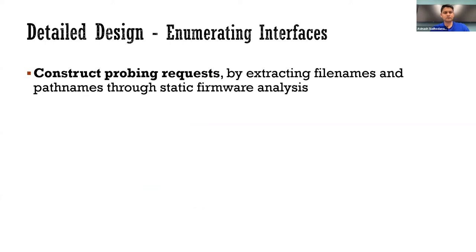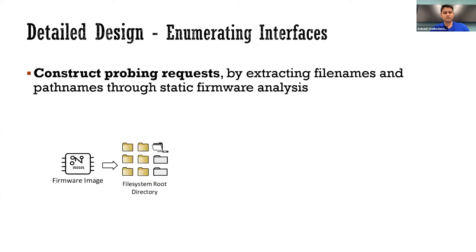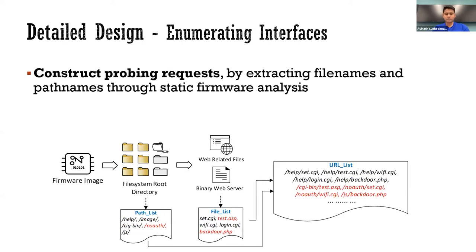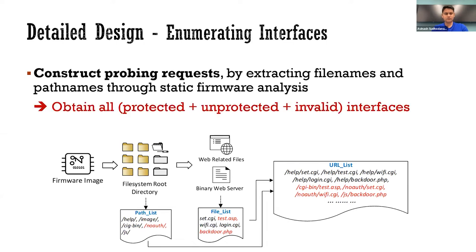The first module constructs possible probing requests by extracting filenames and path names through static firmware analysis. We decompose the firmware image and use regular expressions to analyze the web files and get a list of filenames. Then we analyze the root directory of the filesystem to get path names. Aggressively concatenating path names and filenames can construct probing requests. In this step, we obtain all interfaces.